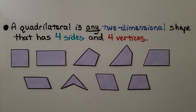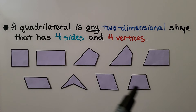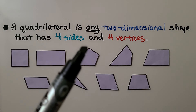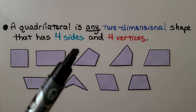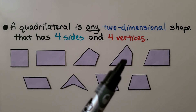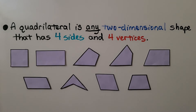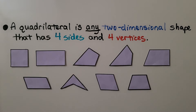A quadrilateral is any two-dimensional shape that has four sides and four vertices. You might think it would just be a square or a rectangle, but all of these are quadrilaterals — each one has one, two, three, four sides and four vertices. These are all quadrilaterals.